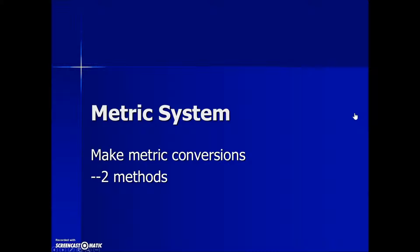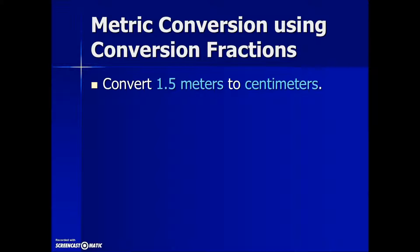There are two ways that we can make metric conversions. In this first example, we're going to use conversion fractions. The problem asks us to convert 1.5 meters to centimeters. So we start with the given information expressed as a fraction with a denominator of one. Then we're going to look for the relationship between meters and centimeters to express it as a conversion factor fraction.